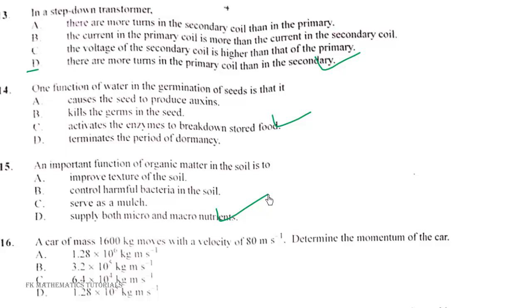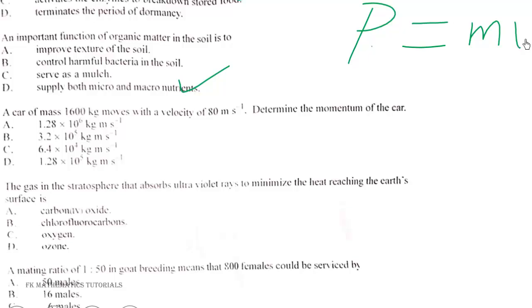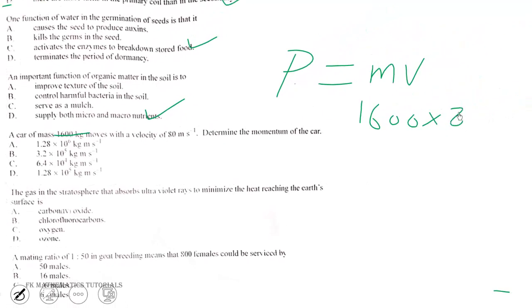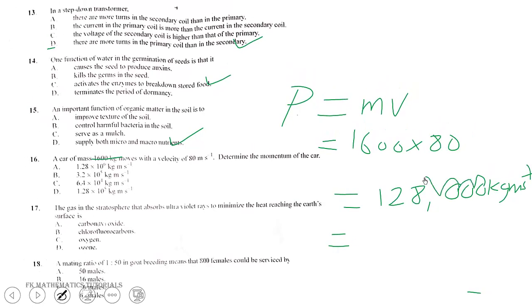Question 16. A car of mass 1600 kg moves with a velocity of 80 meters per second. Determine the momentum of the car. Momentum is given by mass in kilogram times velocity in meters per second. So 1600 kg times 80 meters per second equals 128,000 kilogram meters per second. In standard form, that's 1.28 times 10 to the power of 5. The correct answer is D.